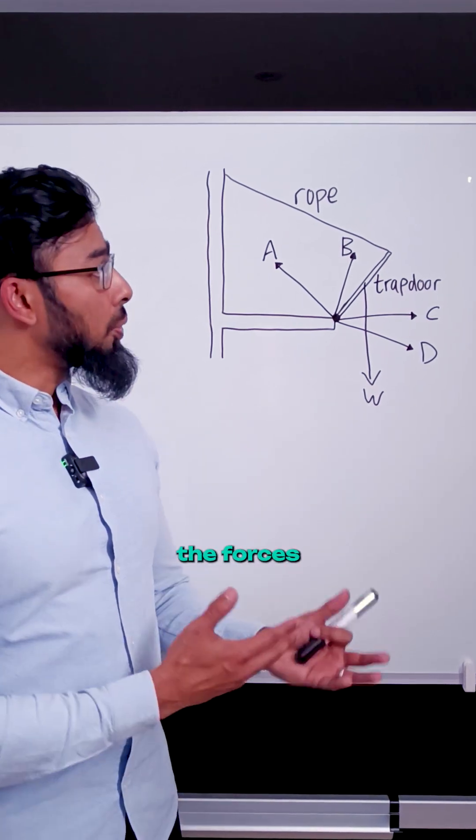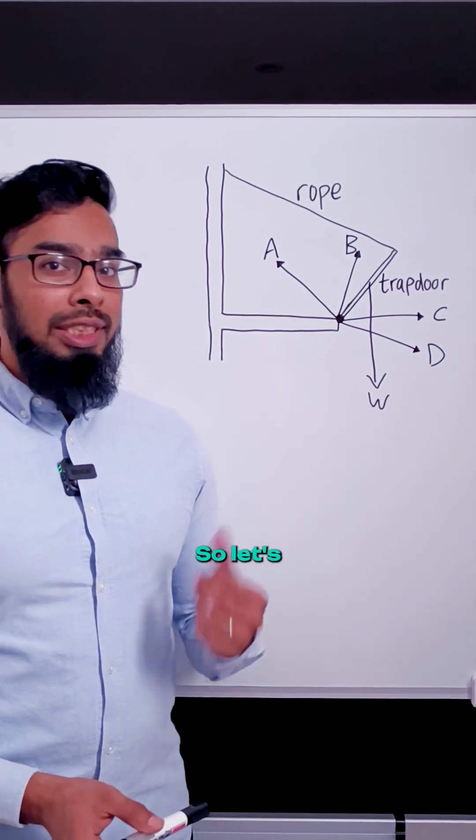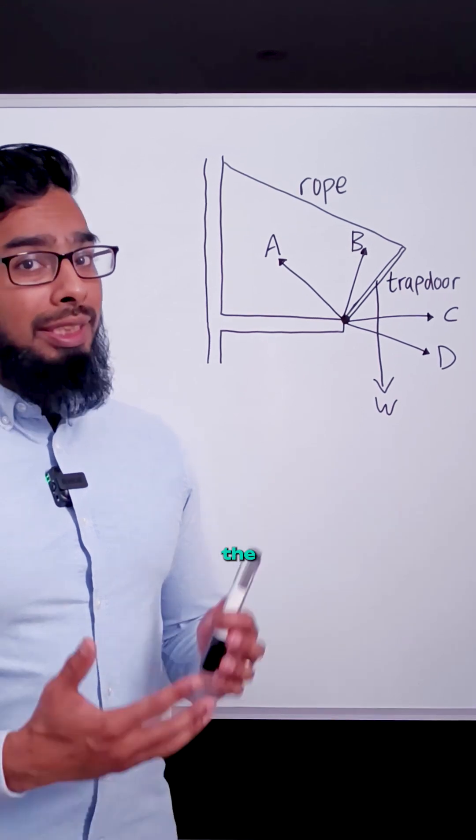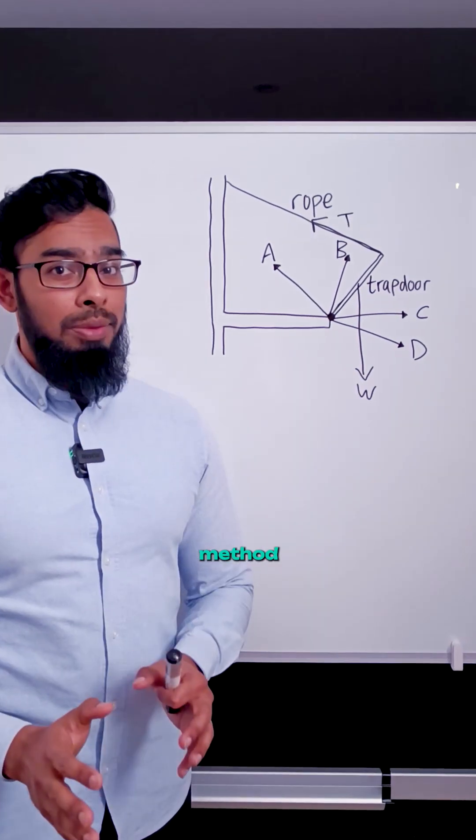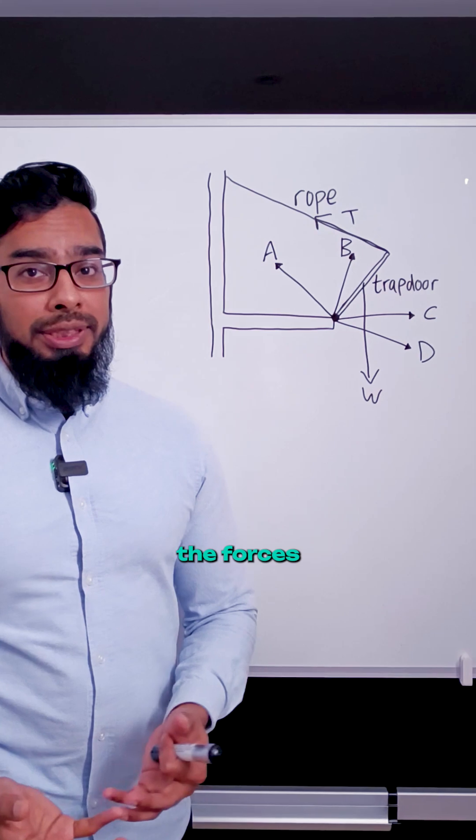In the question we're interested in the forces that are acting on the trapdoor only. So let's just add in one more force that isn't drawn on the trapdoor, which is the tension in the rope. In the tip-to-tail method we're only interested in the forces acting on the trapdoor.